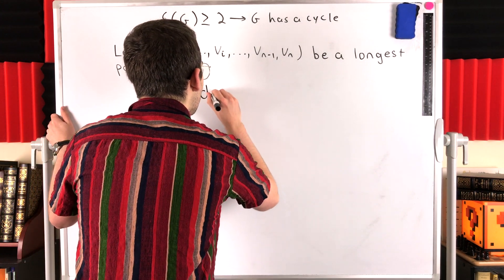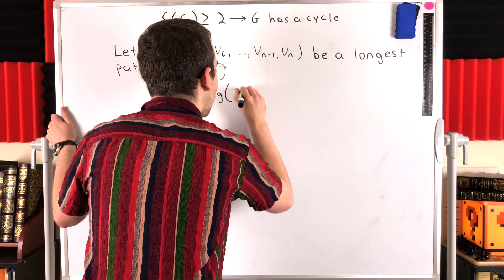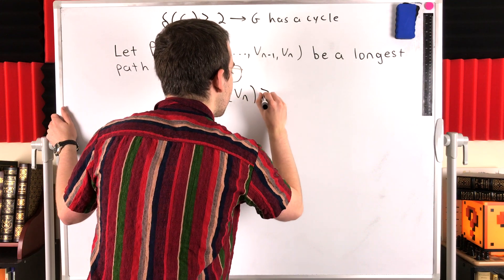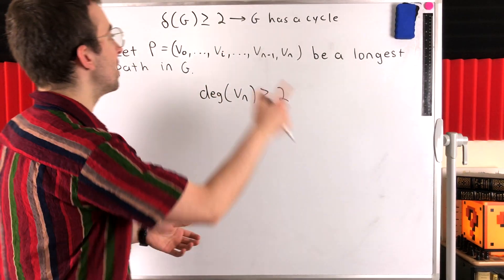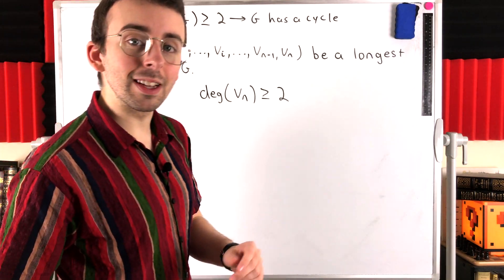We know that the degree of the last vertex in our longest path, VN, has to be at least two, because the minimum degree of the graph is at least two.